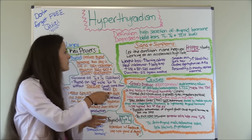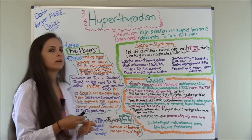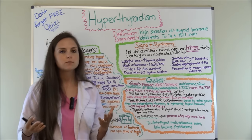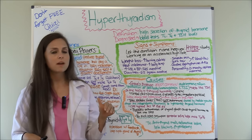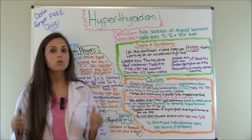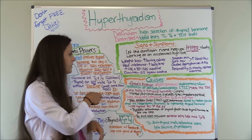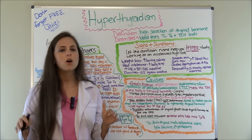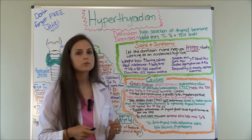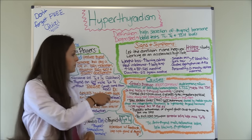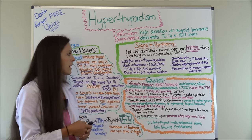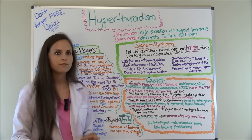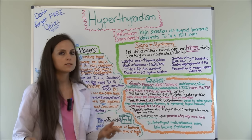You're going to have weight loss. Why? T3 and T4 help you burn calories, and with excessive amounts, they're going to be burning calories like crazy and losing weight. They're going to have heat intolerance — they literally feel hot and sweaty and cannot tolerate the heat, because their body temperature is increased. They're also going to have an increased heart rate and blood pressure, due to the sympathetic nervous system being in overdrive — constantly in that fight-or-flight response.